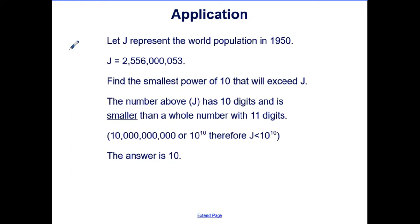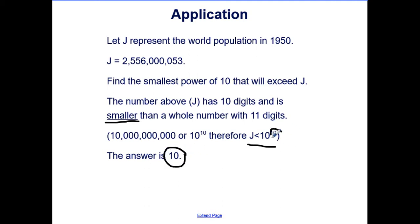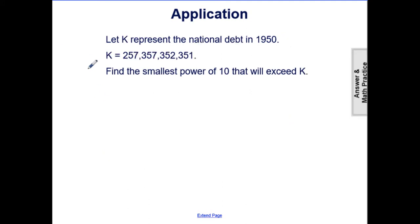Here is an application of magnitude. Let J represent the world population in 1950. Find the smallest power of ten that will exceed J. The number J has ten digits and is smaller than a whole number with eleven digits. So ten to the tenth is greater than J, meaning J is less than ten to the tenth. Therefore the smallest power of ten that exceeds J has an exponent of ten.